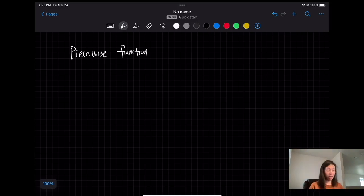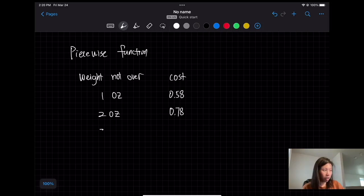Let's go back to our earlier example: the cost of a letter in the postal office. If the weight is not over 1 ounce, the cost is going to be 58 cents. If it's not over 2 ounces, it's going to be 78 cents. If it's less than 3 ounces, it's going to be 98 cents. If it's less than 3.5 ounces, it's going to be a dollar and 18 cents. So this is the piecewise function. So how do we do that?